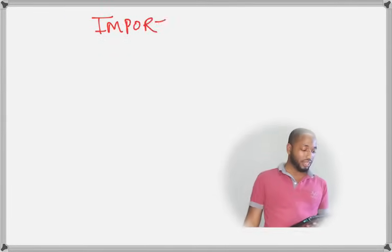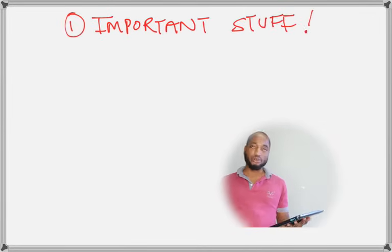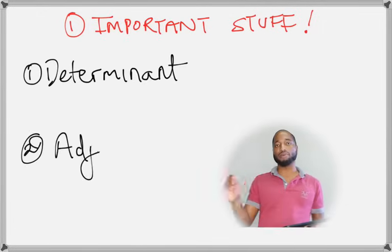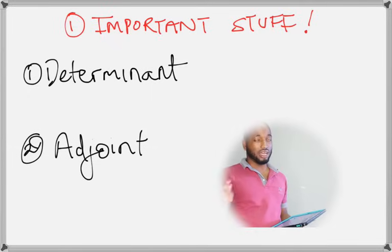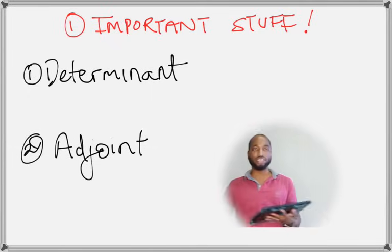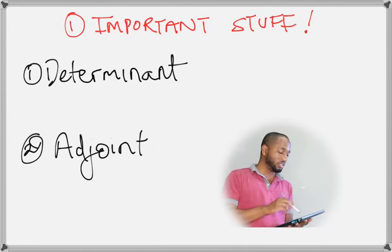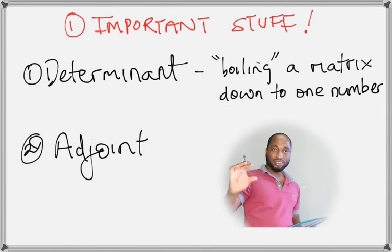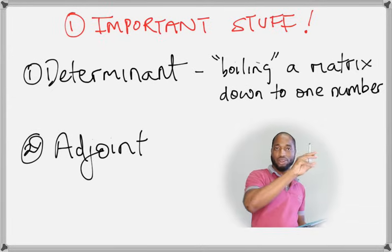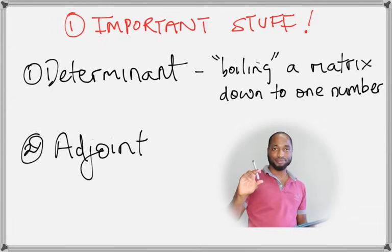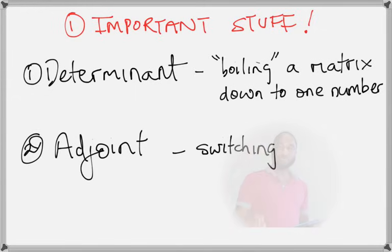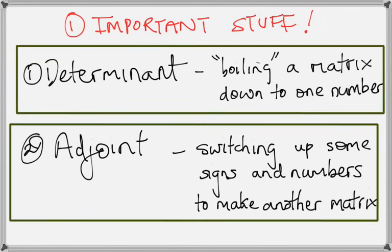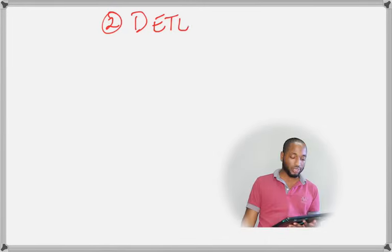If your matrix is called A, its inverse is A⁻¹. Some important prerequisites for finding the inverse: one, being able to find the determinant of a matrix, and two, being able to find the adjoint matrix. The determinant is basically one specific number that every matrix can be boiled down to. The adjoint is where we swap two numbers in the matrix and switch the signs on the other two.